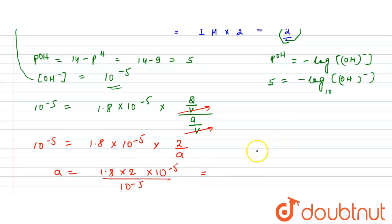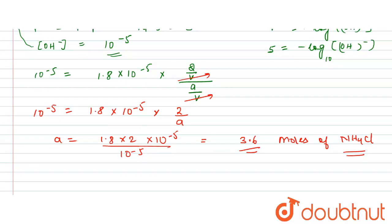From here, A = (1.8 × 2 × 10⁻⁵) / 10⁻⁵ = 3.6. So the number of moles of NH4Cl is 3.6. This is our required answer. I hope you have understood. Thank you very much.